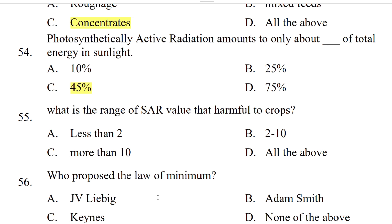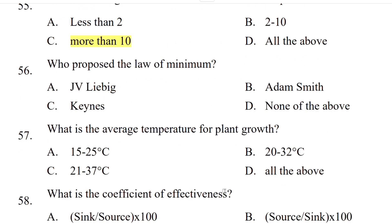The correct answer is 45%. What is the range of SAR value that is harmful to crops? Less than 2, 2 to 10, more than 10, or all of the above? The correct answer is more than 10. Who proposed the law of minimum? JV Liebig, Adam Smith, Gains, or none of the above? The correct answer is JV Liebig.